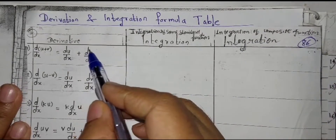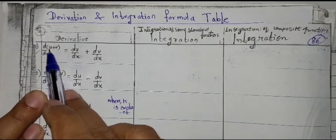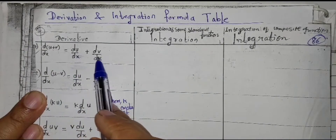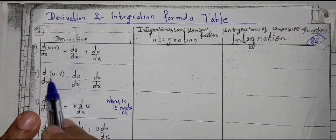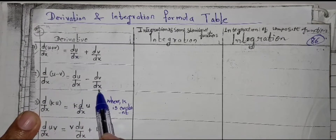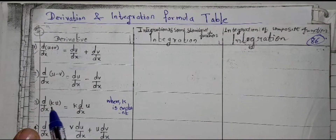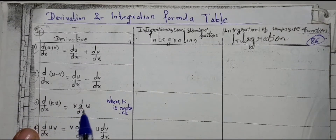Now let us see some formulas of derivation. The second formula: d by dx of u minus v is equal to du upon dx minus dv upon dx. Third: d by dx of ku — here k is a constant — so we take k outside since it is a constant, giving k times d by dx of u.